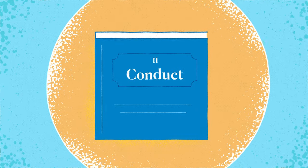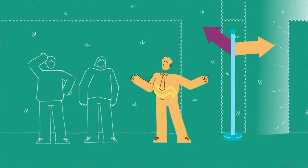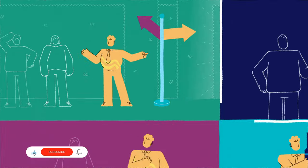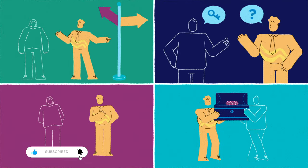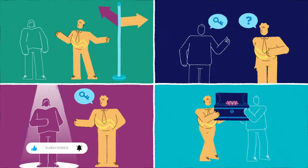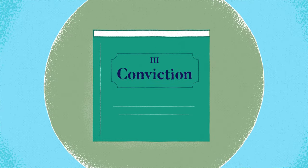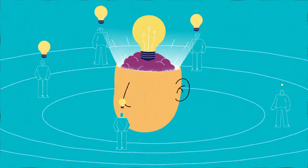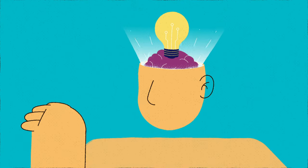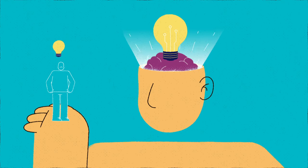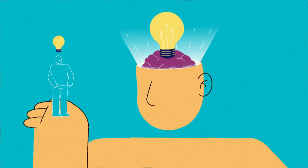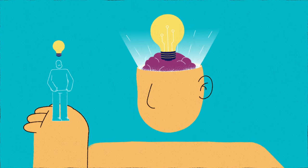Meanwhile, our conduct exemplifies the principles of multiplier leadership. We lead by example, actively seeking input, sharing credit and empowering others. Multiplier leaders possess a deep conviction in the potential of every team member. We believe in their capabilities and foster an environment where each individual is encouraged to excel.